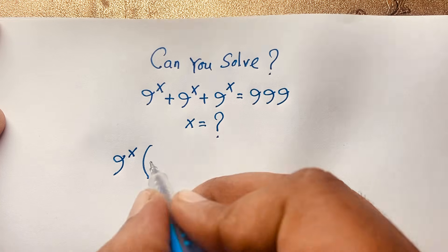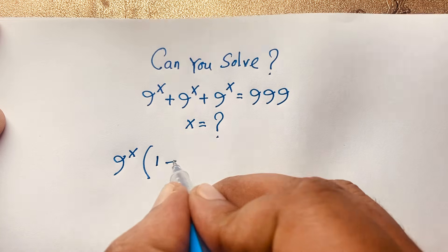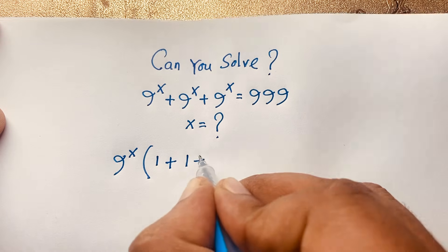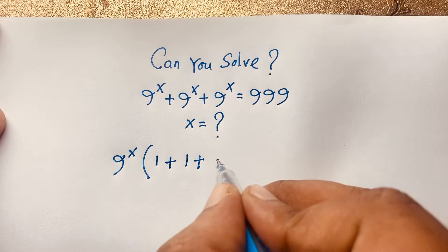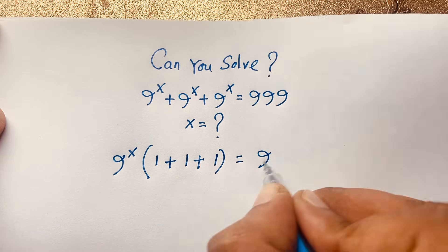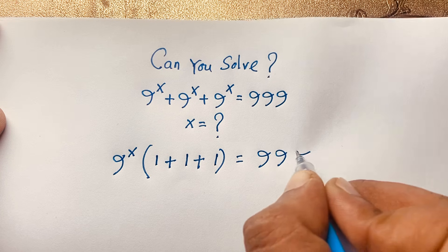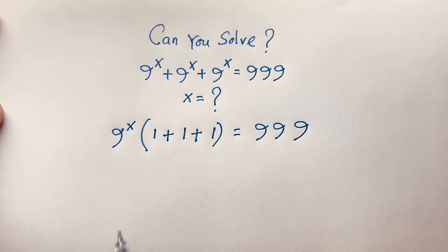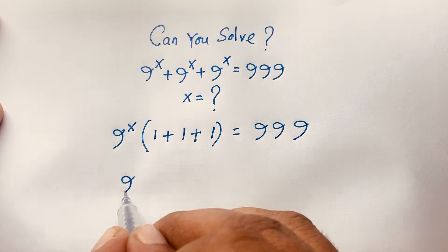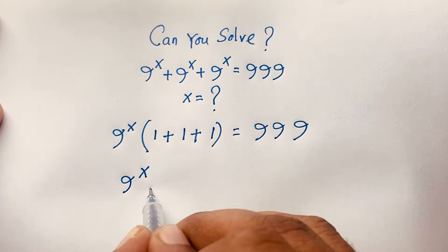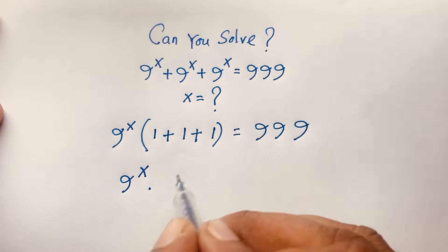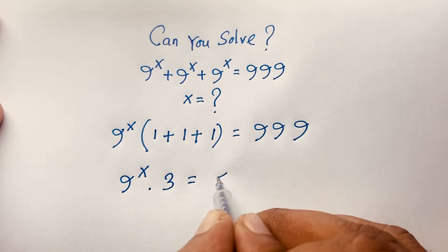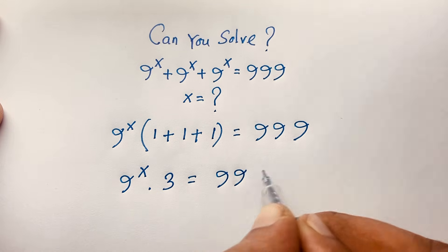So if we divide each term by 9^x, each gives 1. That gives us 1 plus 1 plus 1, which equals 3. So we have 9 to the power x times 3 equals 999.